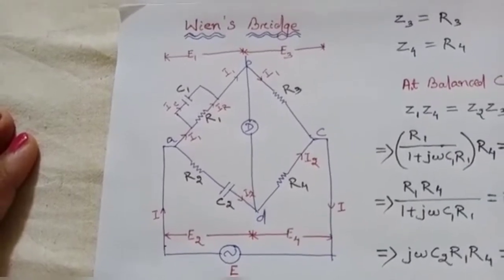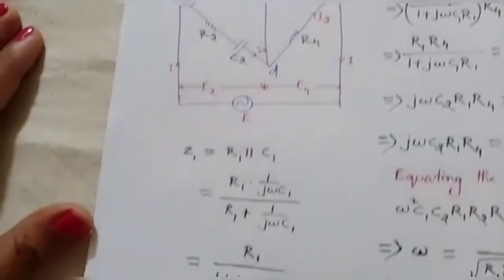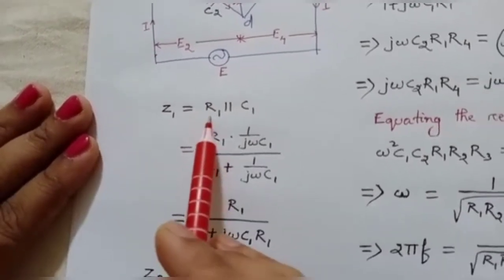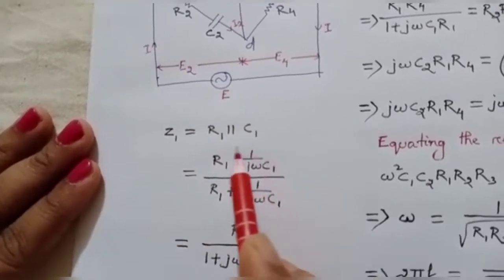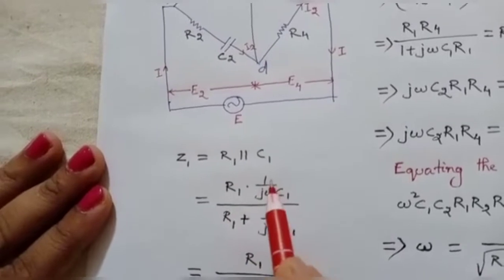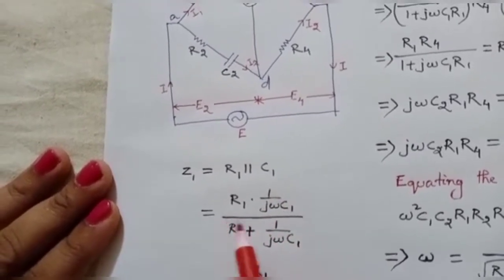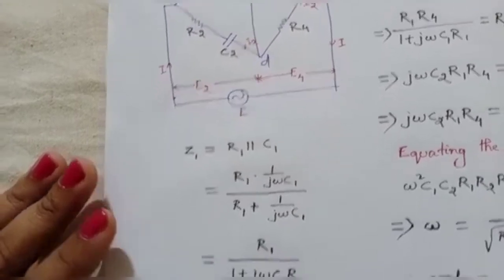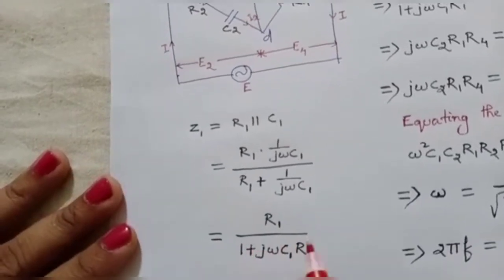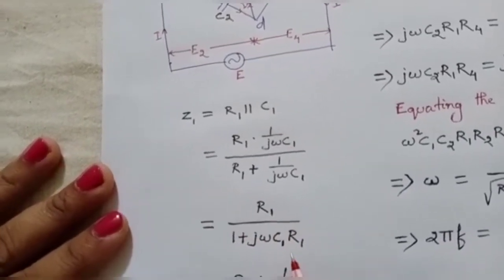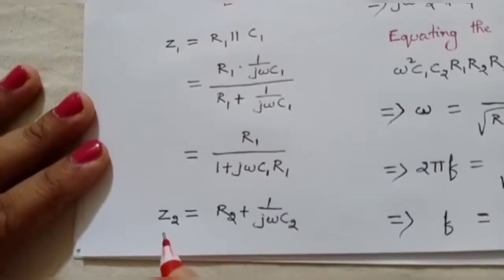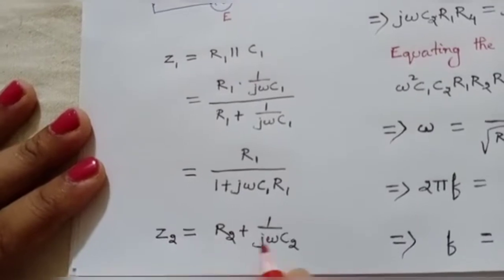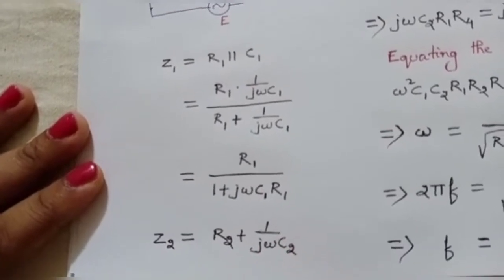First we write down all the impedance values. Z1 is a parallel combination of R and C, so we write: Z1 = R1 × (1/jωC1) / (R1 + 1/jωC1), which simplifies to R1 / (1 + jωC1·R1). Then Z2 is a series RC circuit, so Z2 = R2 + 1/(jωC2).